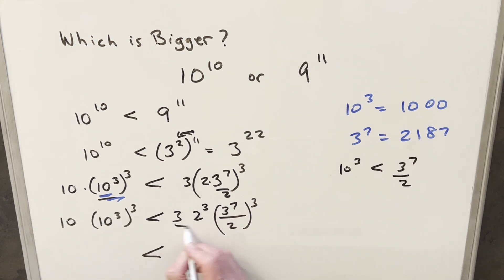But now here combining all this, this 2 cubed, 2 cubed is 8 times 3, so now we have 24 times this thing cubed, and we're saying this is greater than 10 times 10 cubed, all cubed.